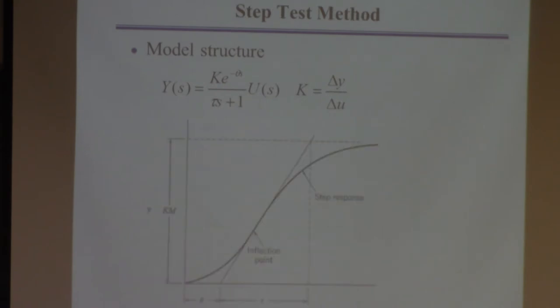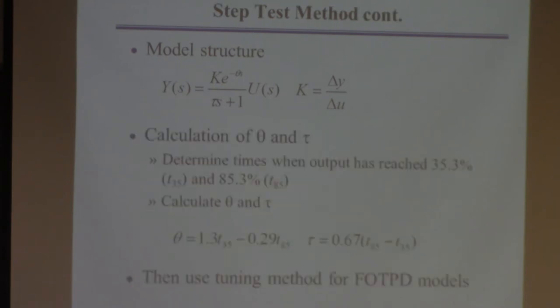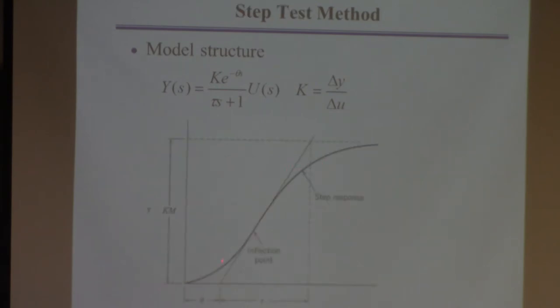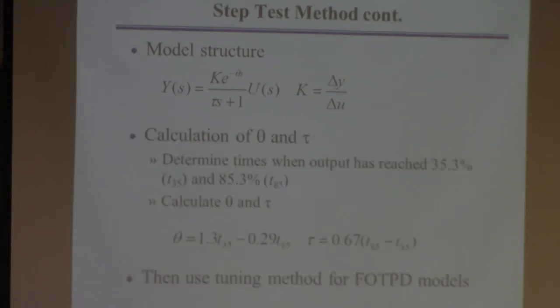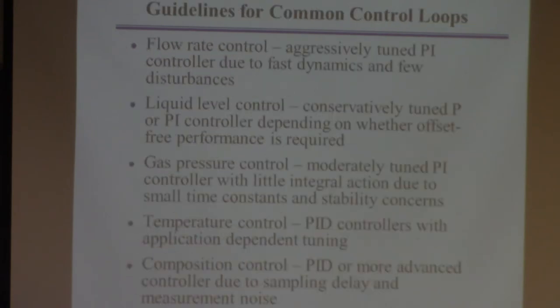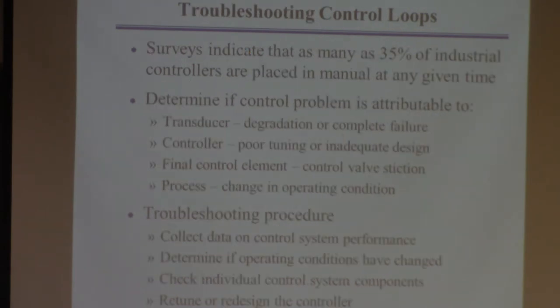Here was just a review from a previous lecture on empirical modeling saying that if you want to get a first order plus time delay model, which a lot of these tuning methods use, you can do this using this method where you get a response, look at two time points on the curve, and then extract the theta, the time delay, and the time constant from that. So I'm trying to get - sometimes when I don't finish the lecture I spend the first 15 minutes reviewing and then I just get further and further behind. So I'm not falling into that trap.